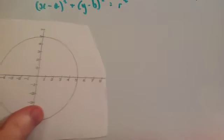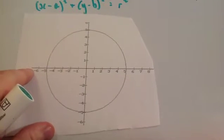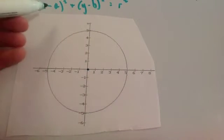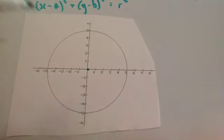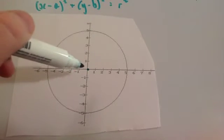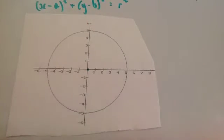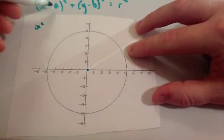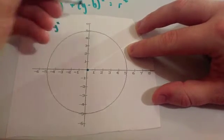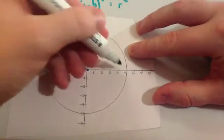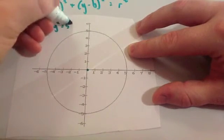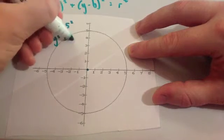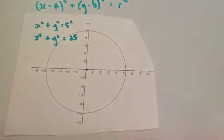So this is the first one. As you can see from this circle, the centre is at the origin, so a and b are both 0. The radius is from the centre to the edge, which is 5. So the equation of the circle is x squared plus y squared equals 5 squared. You could also write that as x squared plus y squared equals 25.